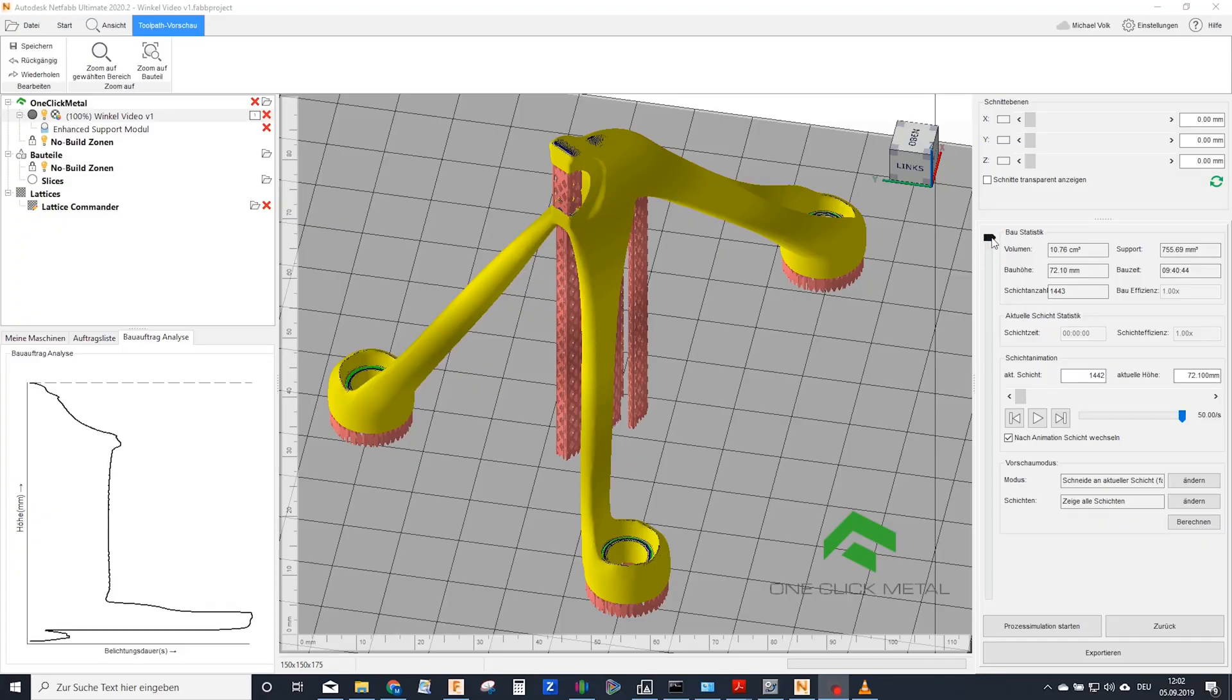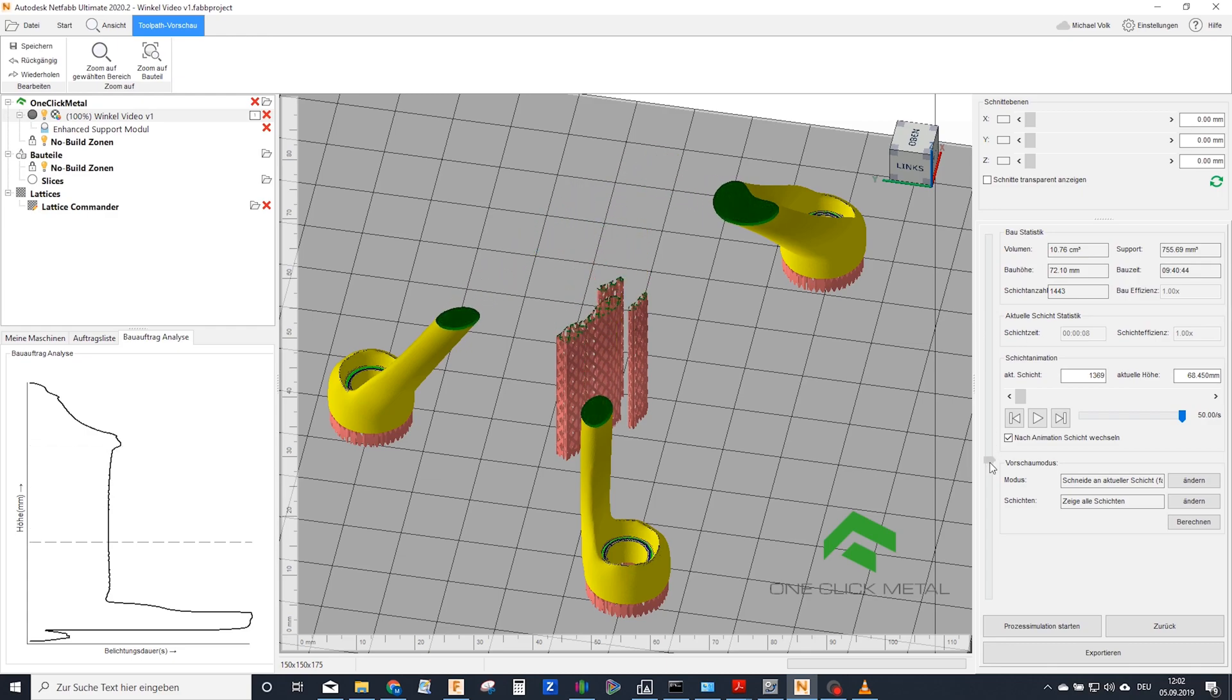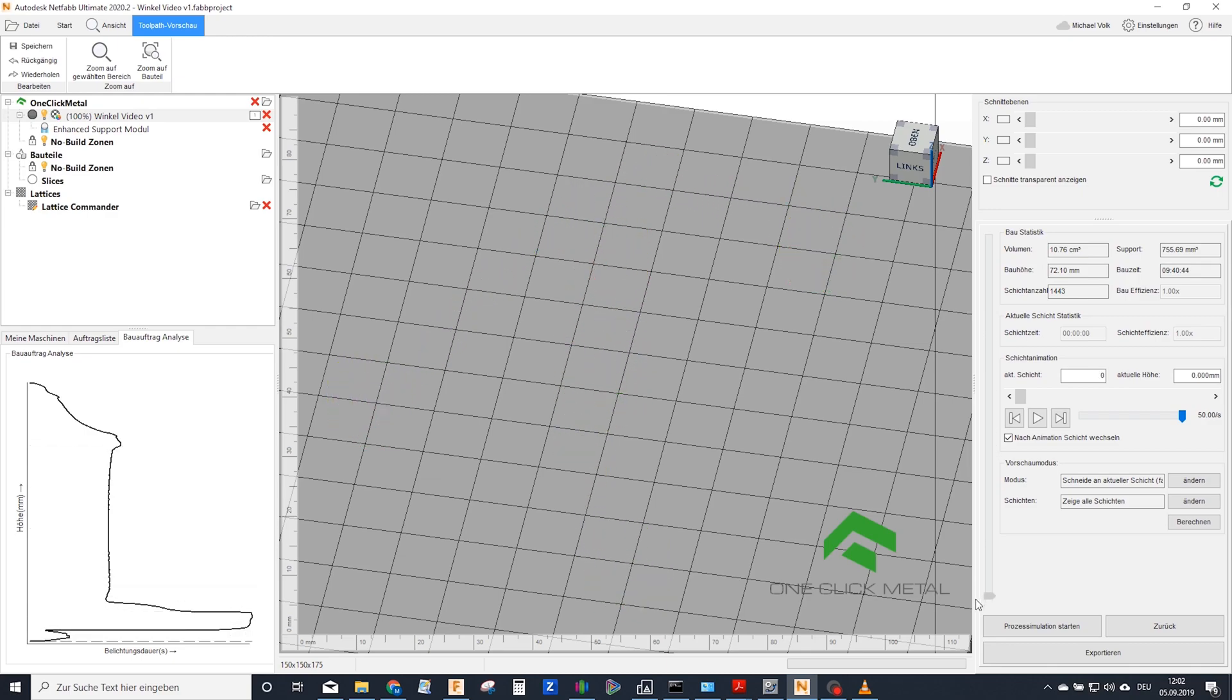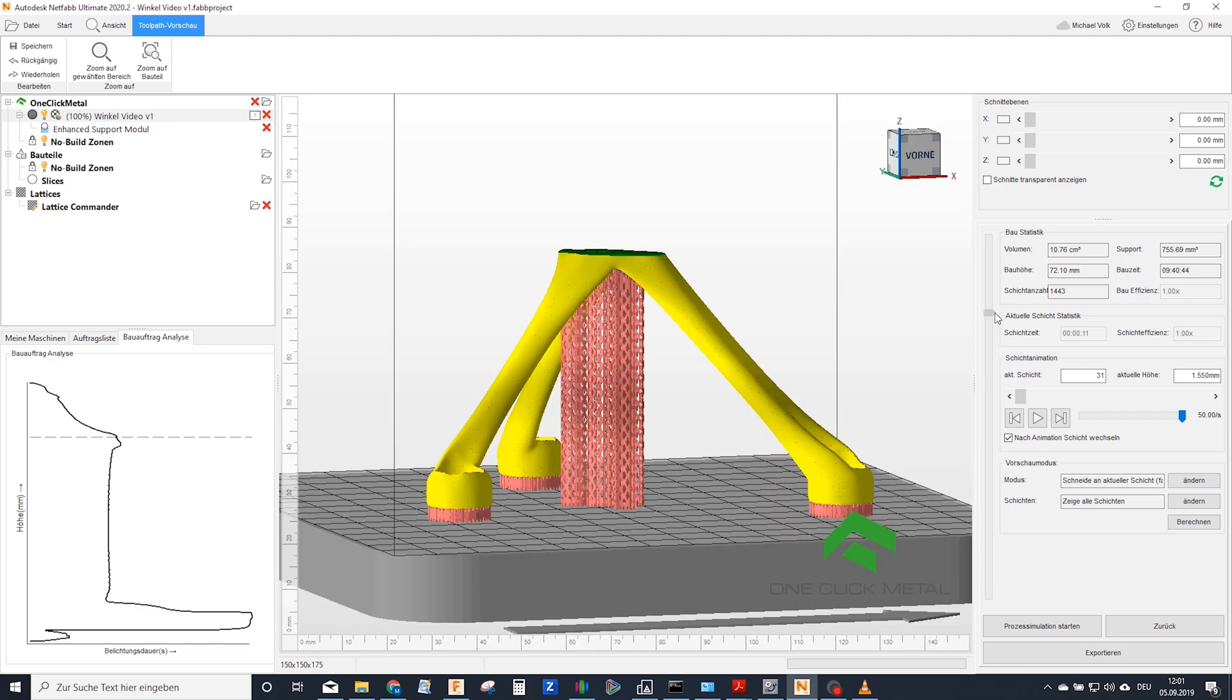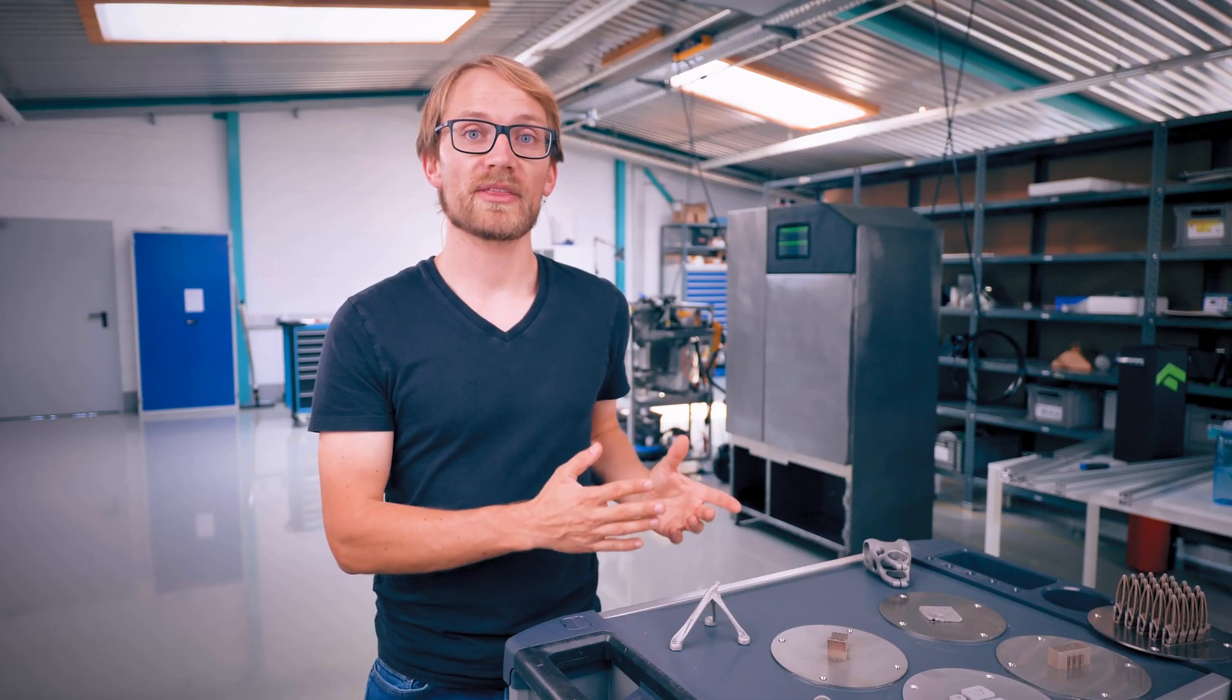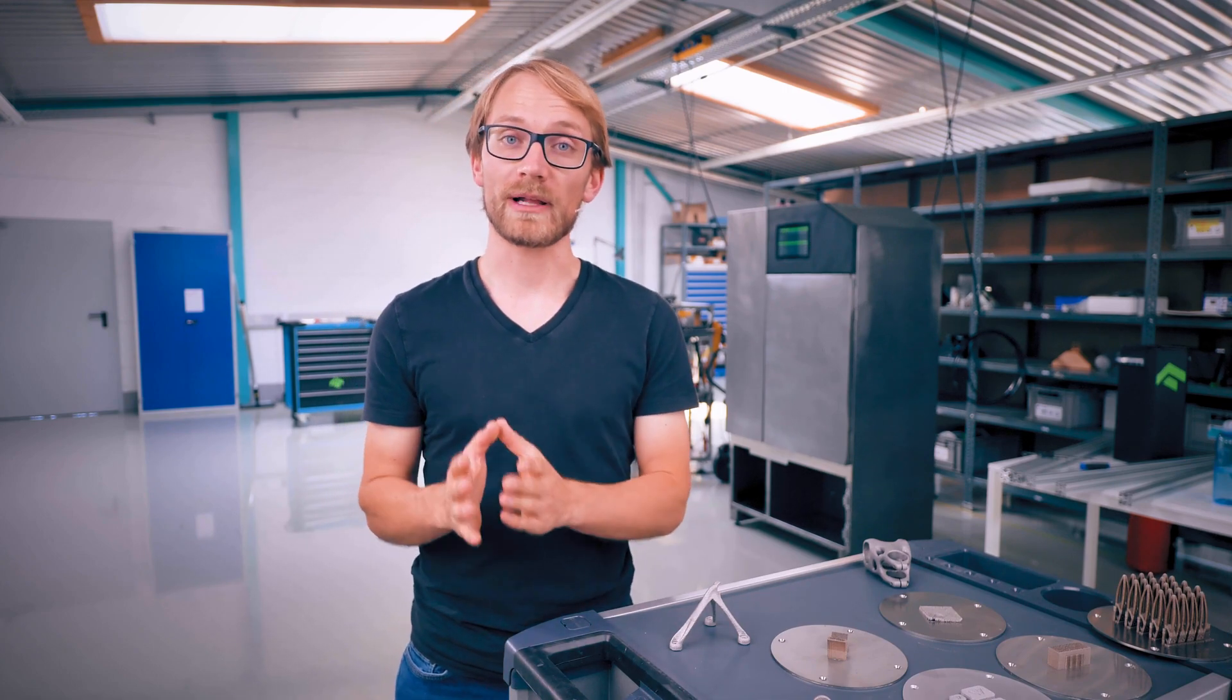Just like with every layer-based additive manufacturing process, it starts by slicing a 3D CAD file into fine layers, automatically adding support structures and other features where needed. These 2D layers are what guide the laser within the printer to melt and weld this fine metal powder in exactly the right spots.